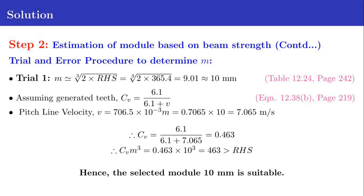We assume the teeth to be generated. The equation for CV in that case is 6.1 divided by (6.1 plus V), equation 12.38B in page 219. We calculate the pitch line velocity V as 706.5 times 10 raise to minus 3 times M. M in this case is 10, so the pitch line velocity V is 7.065 meters per second. By substituting the value of V in the equation for CV, we get CV equals 0.463.